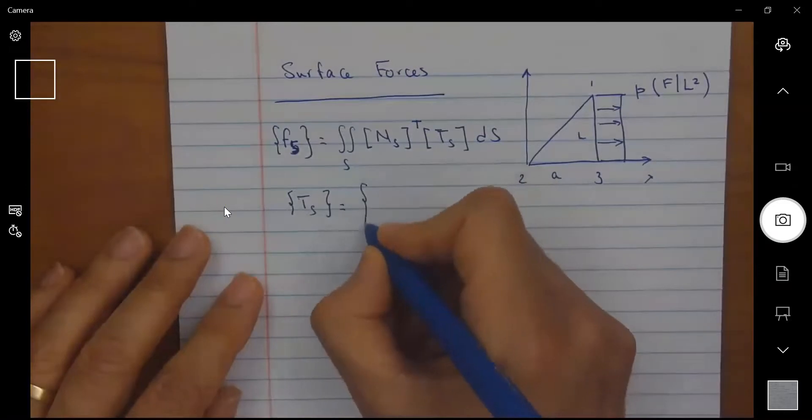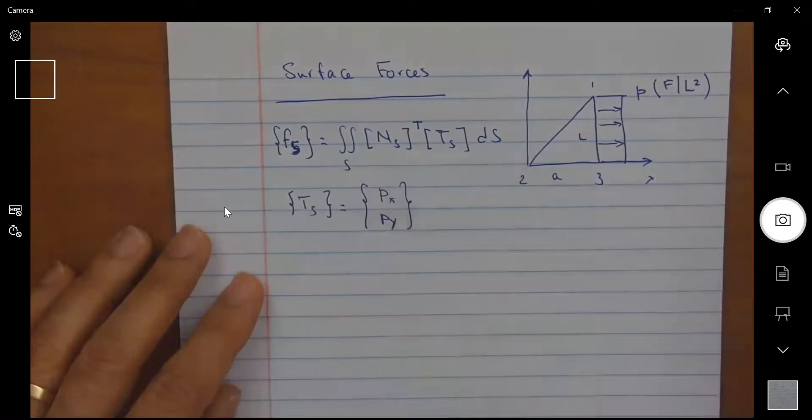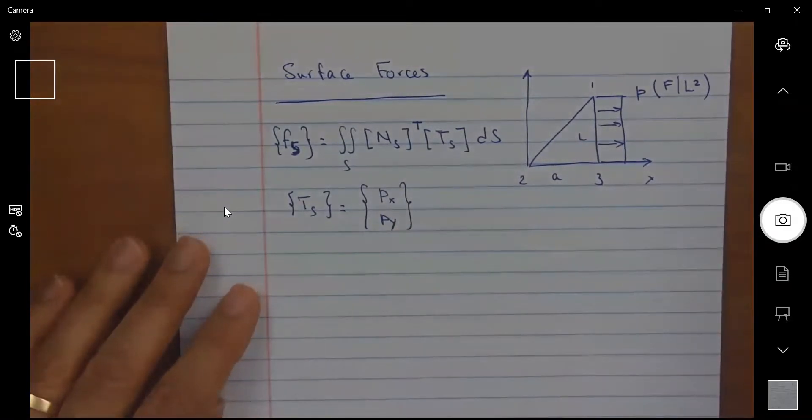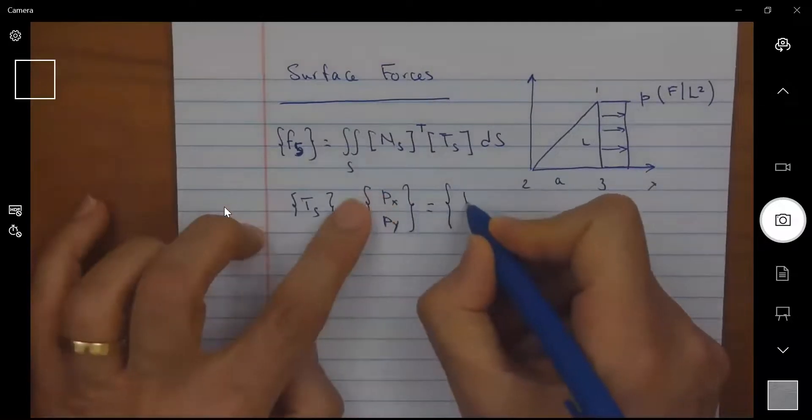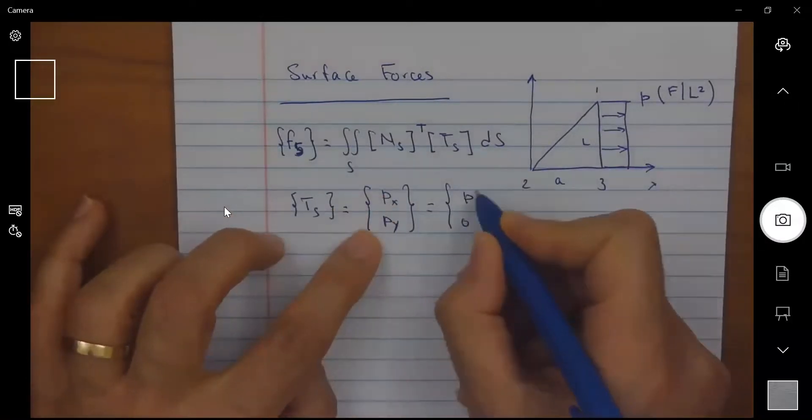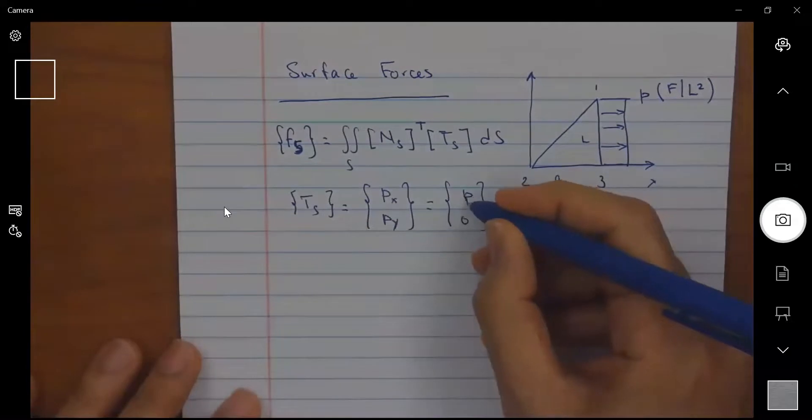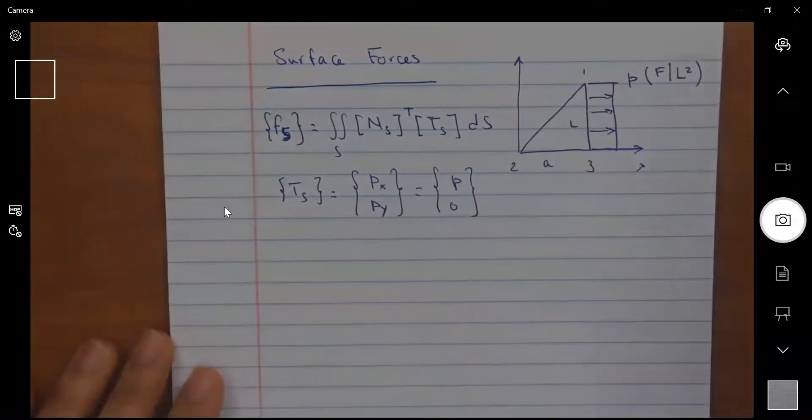Where T S may be represented by the X component and the Y components when working in plane. For this particular example, I have PX equal to P and PY equal to zero. So we're going to use this here to simplify it.